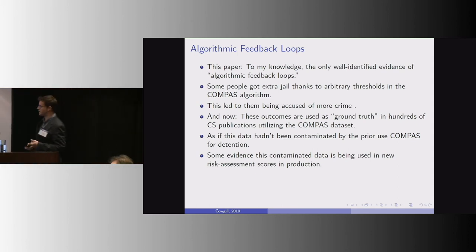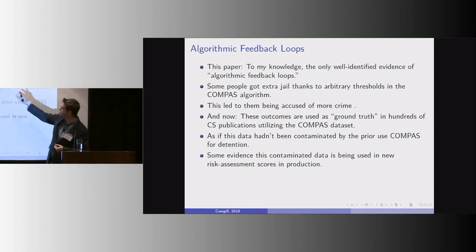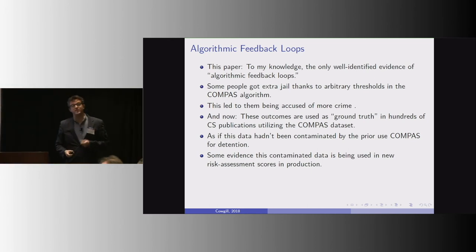This led to them being accused of more crime later on. And now these outcomes are being used in literally hundreds of CS publications using this Compass data set. So they're using it as ground truth as if it had not been contaminated by the very use of the algorithm that they're sometimes studying.